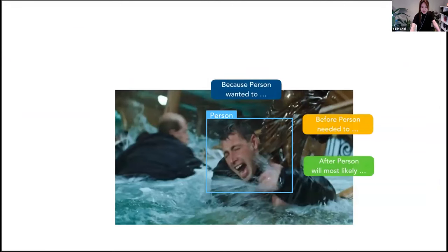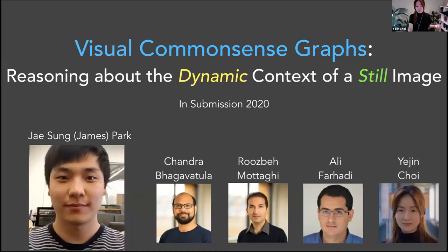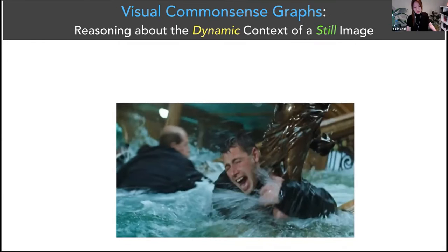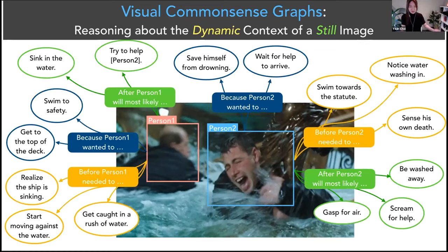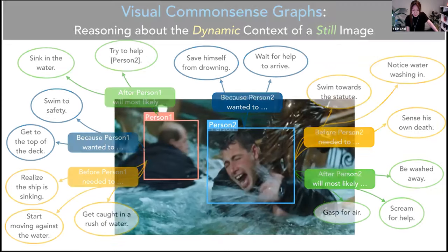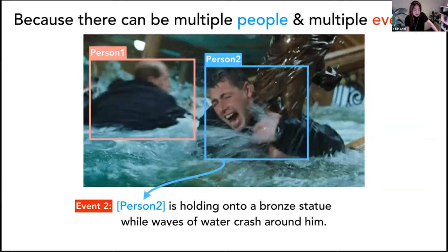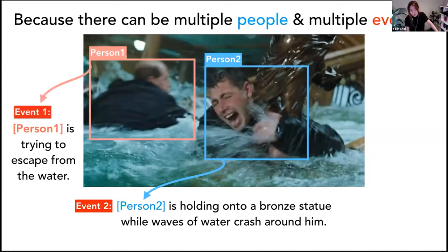Given an image, what we really want is to replicate all these complex inferences that we do, which we pursued in our new work, Visual Common Sense Graphs — about reasoning about the dynamic context of a still image — led by a great student, James, along with other co-authors at UW and AI2. The task we want to pursue is: given an image, we wish to think about all of this at once, just like how humans do. This data set focuses on complex scenes, where there are multiple people engaged in different activities or events, so the description applying to one person does not apply to someone else in the same image.